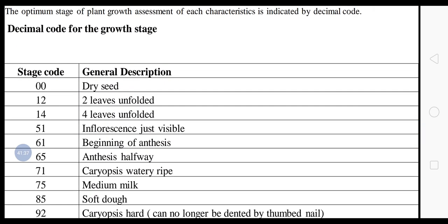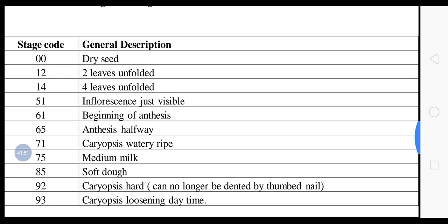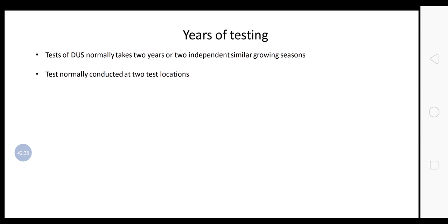The decimal code for growing stages remains the same for different crops. Examples: 00 = dry seed, 12 = 2 leaves unfolded, 14 = 4 leaves unfolded, 51 = inflorescence just visible, 61 = beginning of anthesis, 65 = anthesis halfway, 71 = caryopsis watery ripe, 75 = medium milk, 85 = soft dough, 92 = caryopsis halfway hard, 93 = caryopsis loosening. Two videos on maize DUS testing and rice DUS testing have been uploaded to understand these codes better. Testing normally takes two years or two independent similar growing seasons, conducted at two test locations.